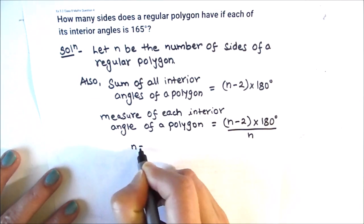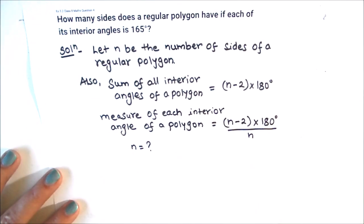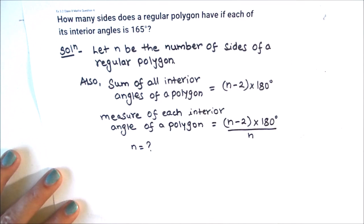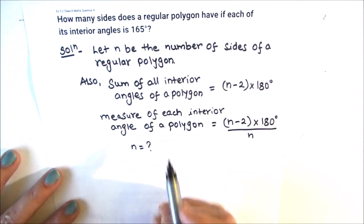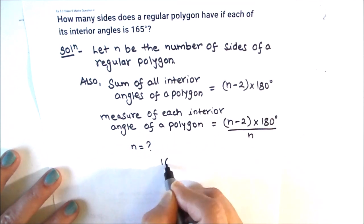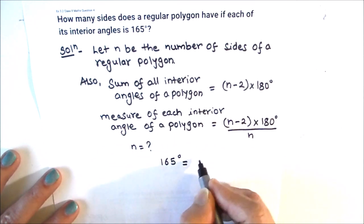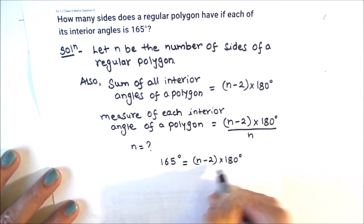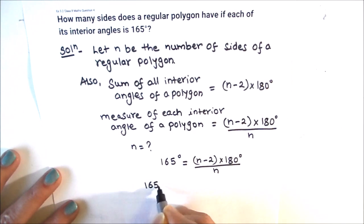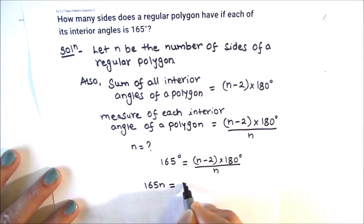We need to find the value of n. The measure of each interior angle is given as 165°. Substituting into the formula: 165 = (n − 2) × 180 / n. Cross-multiplying gives us 165n = (n − 2) × 180.